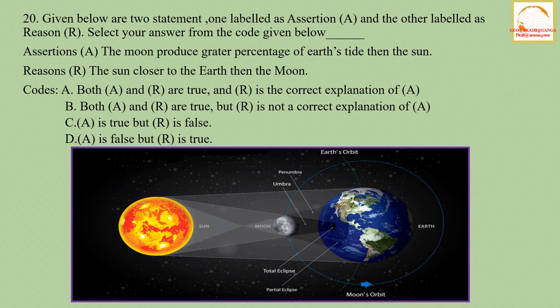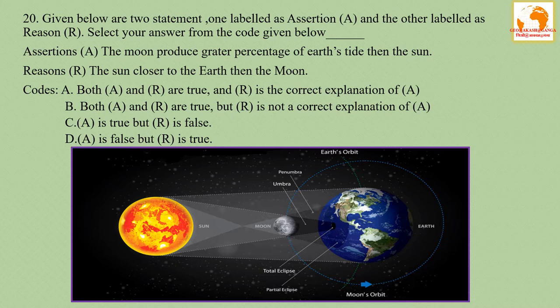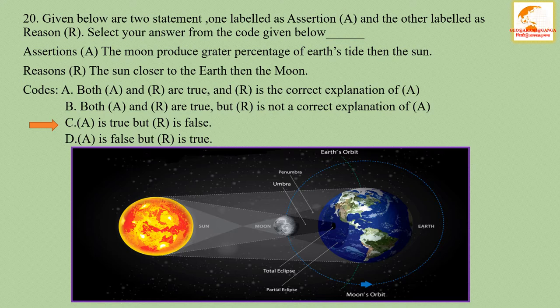Question number twenty: given below are two statements. Assertion: the moon produces a greater percentage of Earth's tides than the sun. Reason: the sun is closer to the earth than the moon. The assertion is correct but the reason is wrong — the moon is actually closer to the earth than the sun, and due to this nearness, the moon produces a greater percentage of Earth's tides than the sun. The correct answer is option C — A is true but R is false.